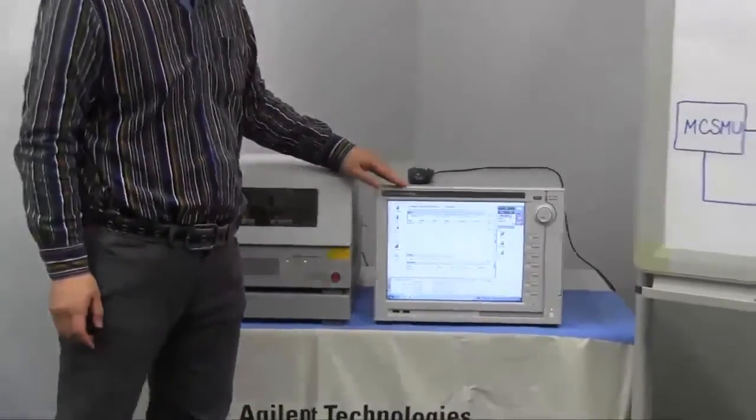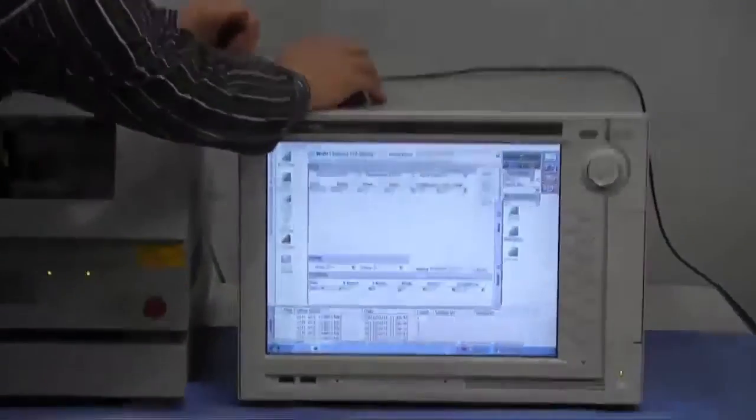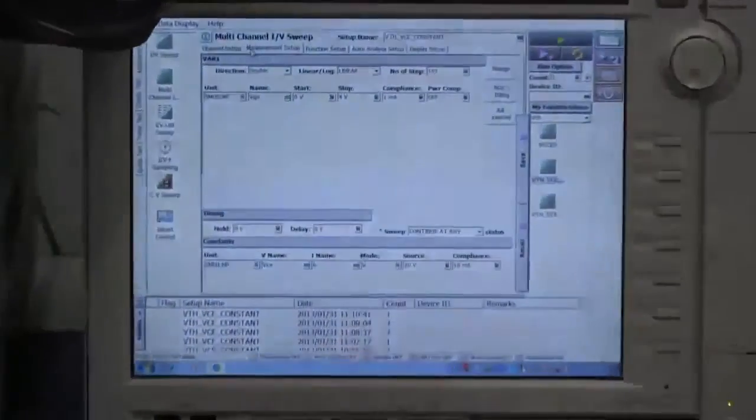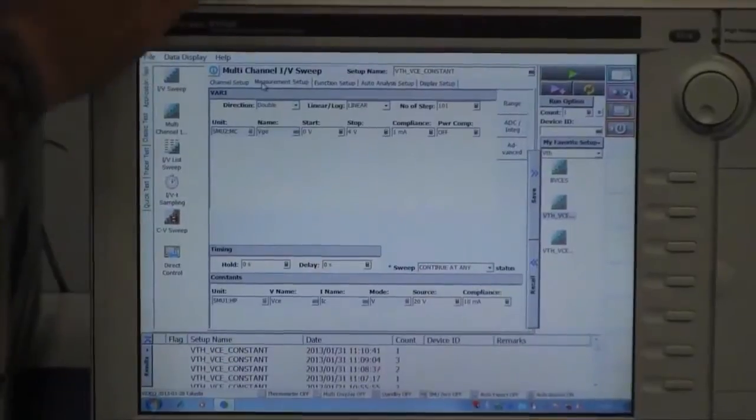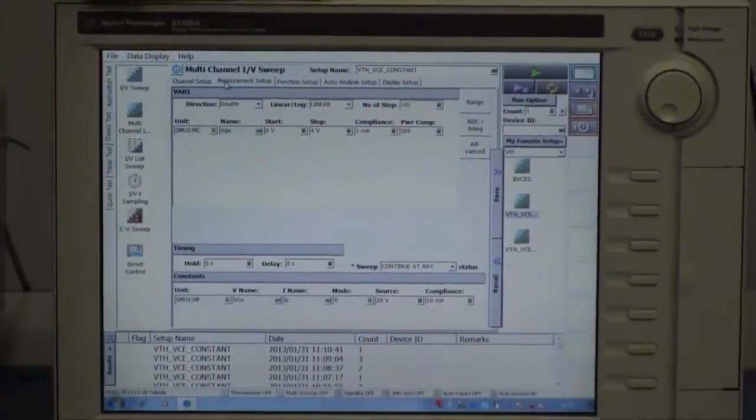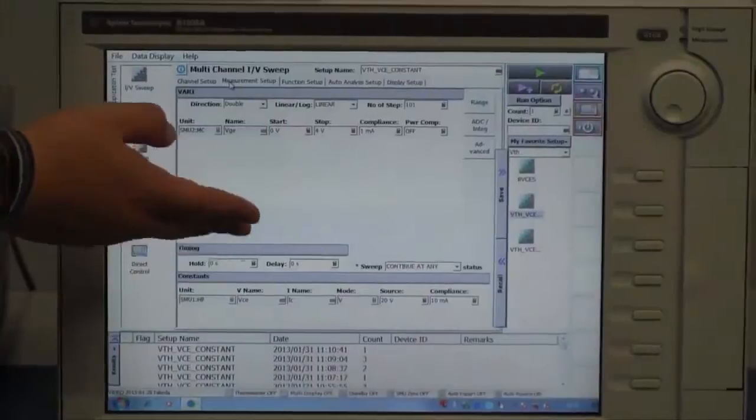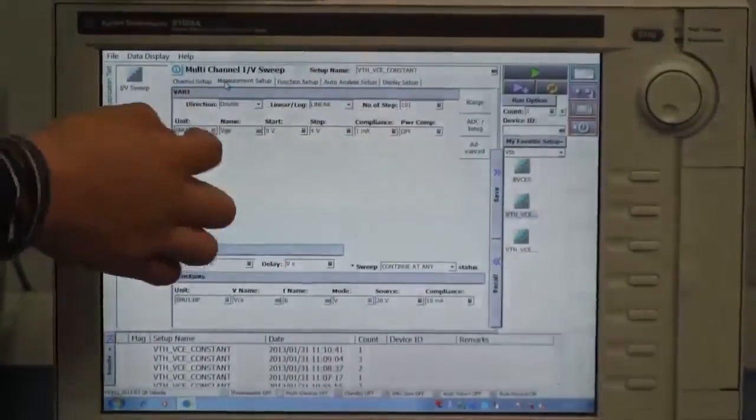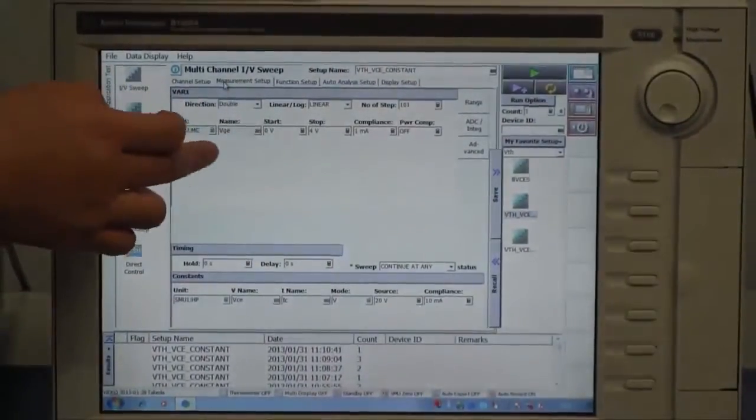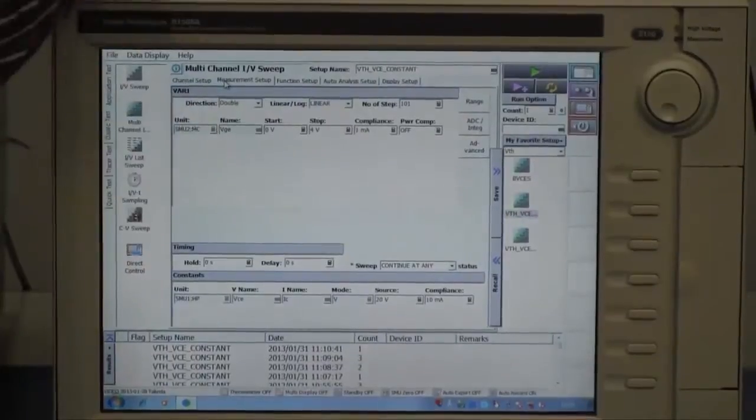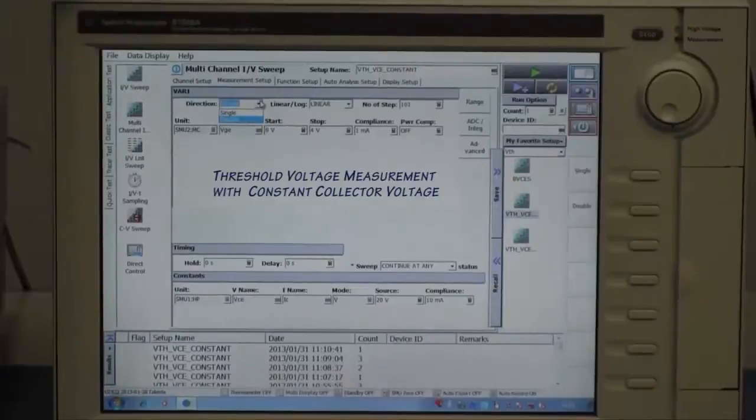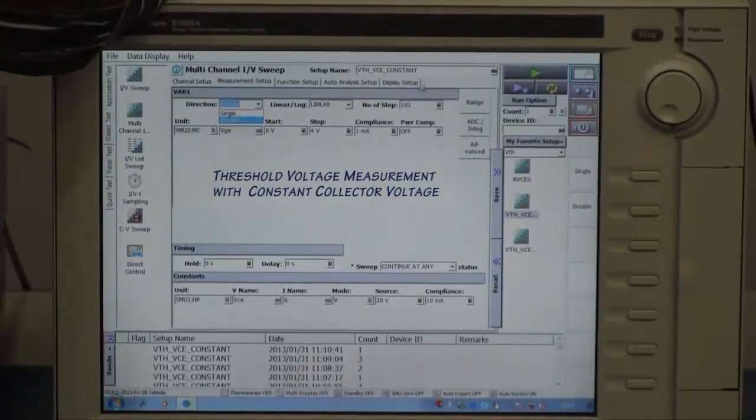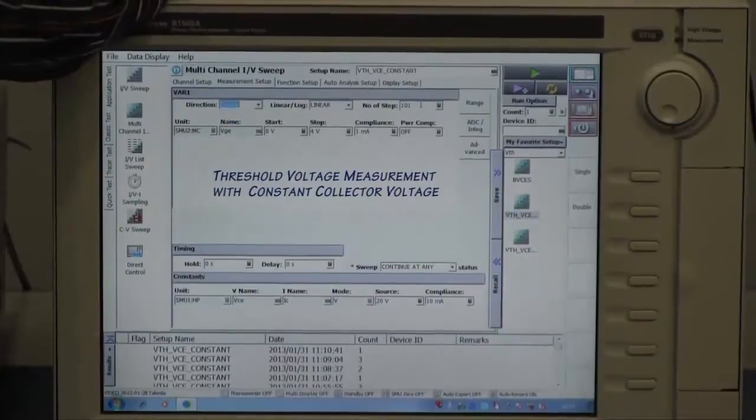Let's see the software side. This is the measurement setup panel. The top one is the gate emitter voltage. I choose the direction sweep double. Double means the up sweep and down sweep. I set the number of points to 101.